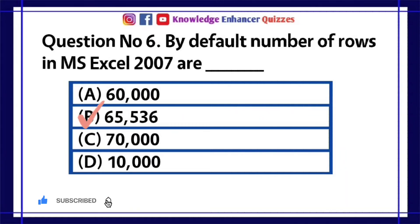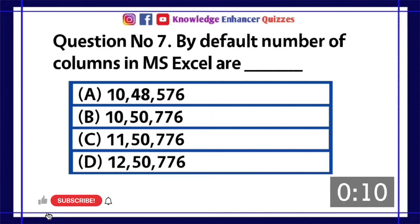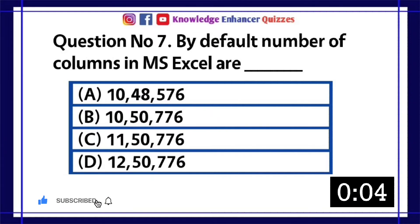Option B is the right answer. Question number 7: By default, number of columns in MS Excel are — A. 10,48,576, B. 10,50,776, C. 11,50,776, D. 12,50,776.